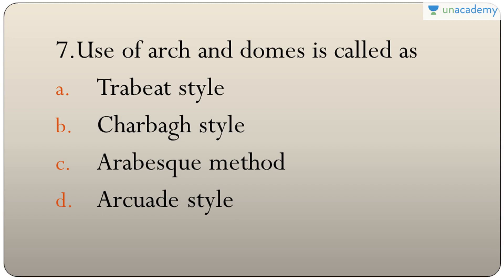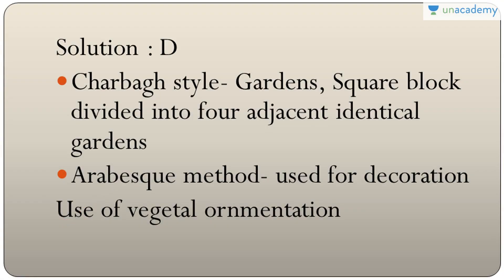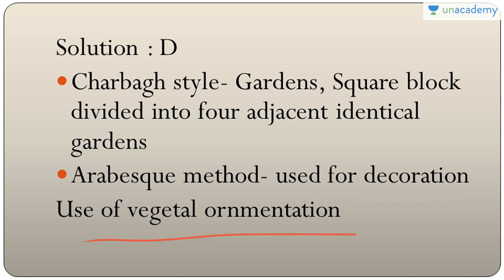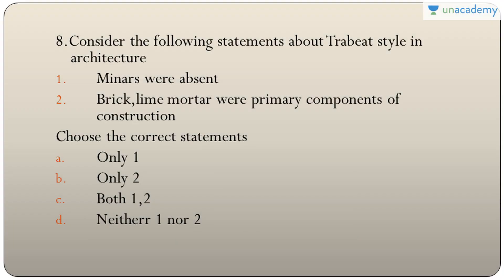Question seven: use of arch and dome is called which style? The answer is D — arcuate style. The Charbagh style refers to a square block surrounded by four gardens. The arabesque method is used for decoration, mainly vegetable ornamentation.